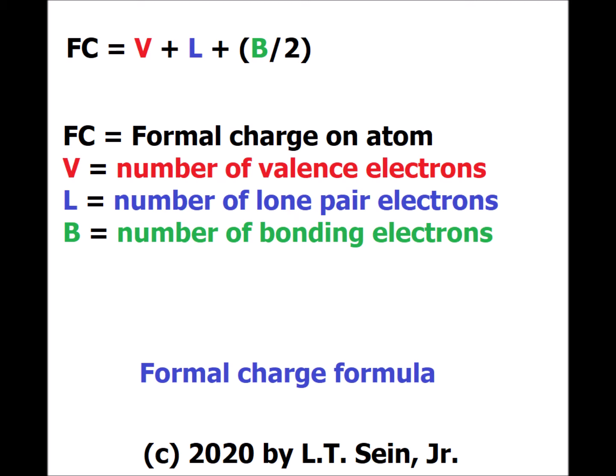One of the reasons for calculating formal charges is that we assume for a stable compound that the formal charges on each atom will be zero, and if they are not, the negative formal charges will be on the most electronegative element.